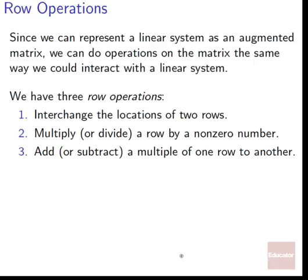That gives us three row operations. The first is to interchange the locations of two rows — swap row one and row two, for example. The second is to multiply or divide a row by a non-zero number — multiply an entire row by 2, 5, negative 10, or divide by 2, which is the same as multiplying by one half. The third is to add or subtract a multiple of one row to another — for example, row two minus two times row five.